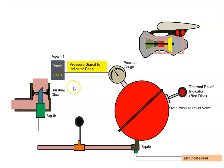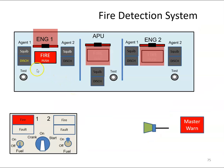The extinguisher has gone in and the discharge light illuminates. Hopefully that's enough to extinguish the fire, and if it has, the fire warning lights will go out. So that's an overview of the process of putting out a fire in the engine.